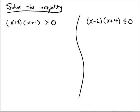On the left we have (x+3)(x+1) > 0, so let's make a number line because it's an inequality. We're going to have more than one answer, potentially lots of answers.